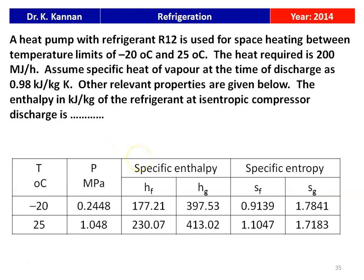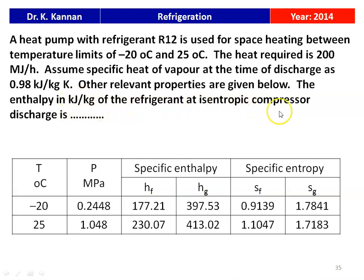This question is from the 2014 question paper. A heat pump with refrigerant R12 is used for space heating between temperature limits of minus 20 degree Celsius and 24 degree Celsius. The heat required is 200 mega joules per hour. Assume the specific heat of vapor at the time of discharge as 0.98 kilo joules per kilogram Kelvin. We have to calculate the compressor discharge enthalpy.